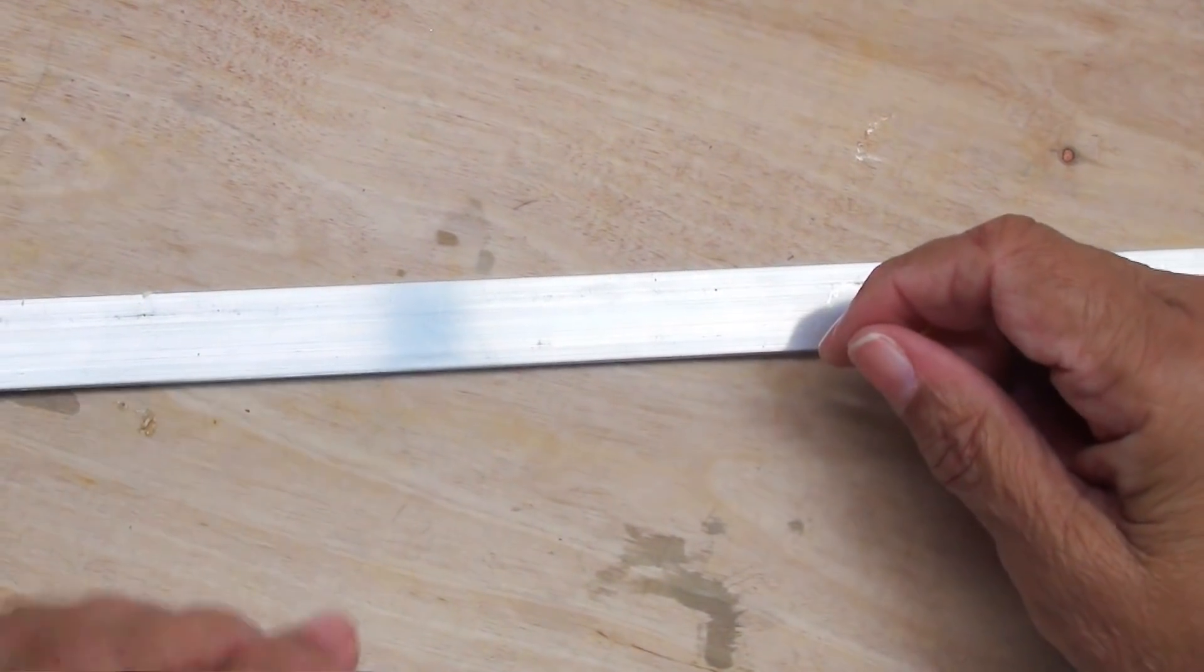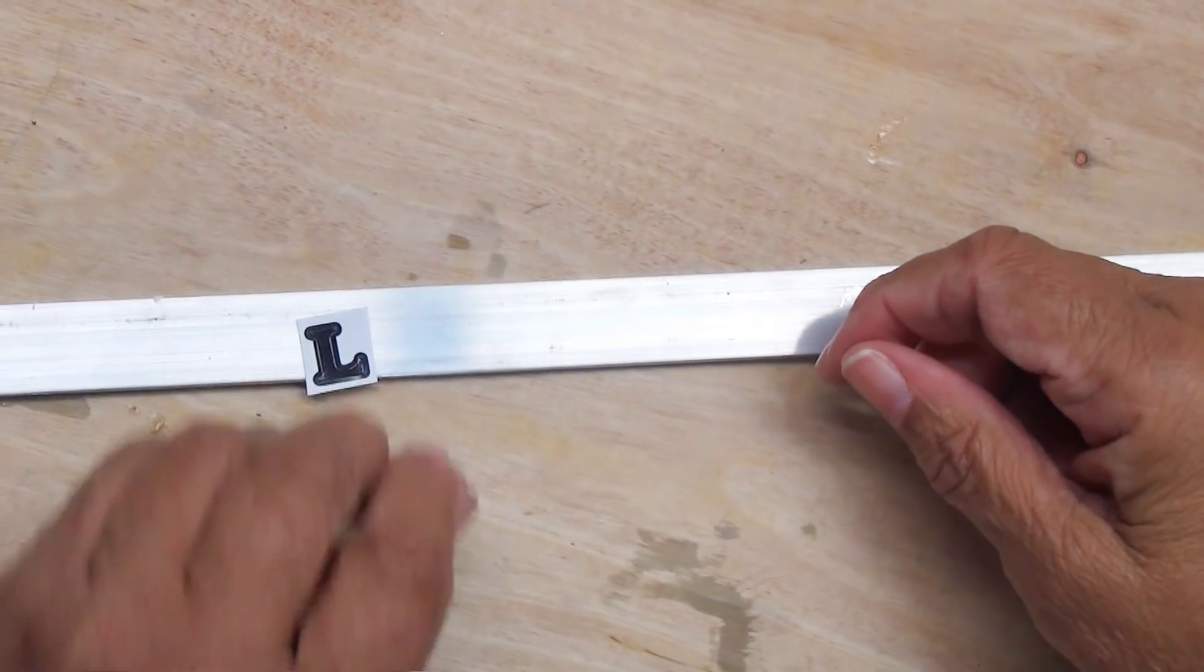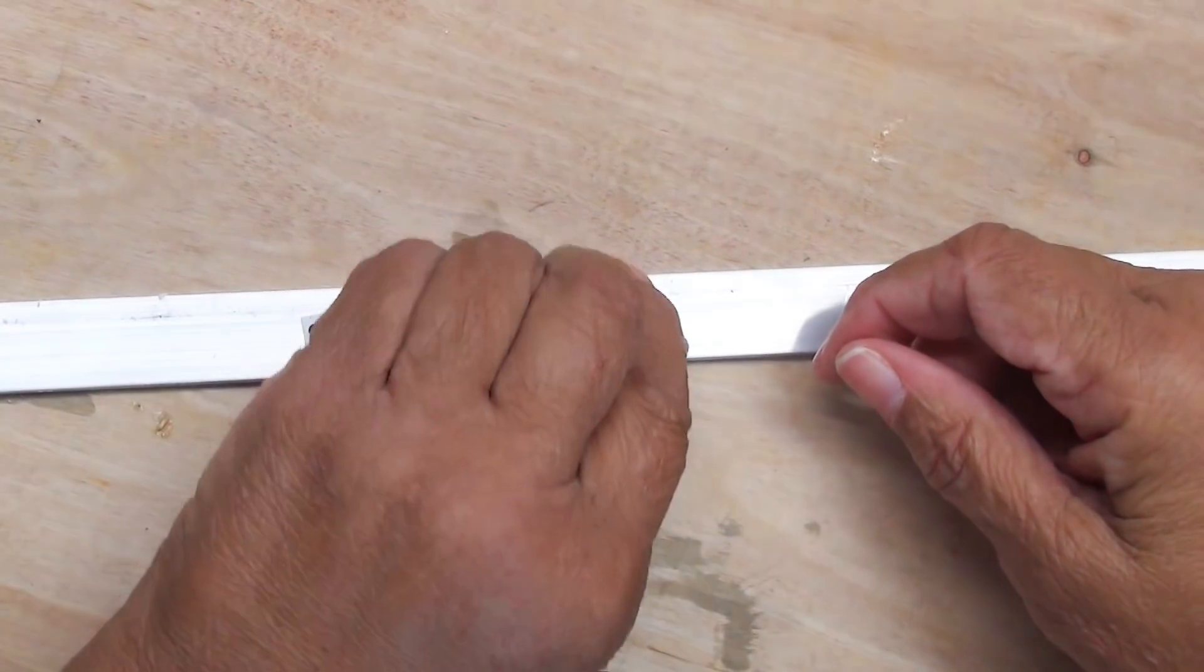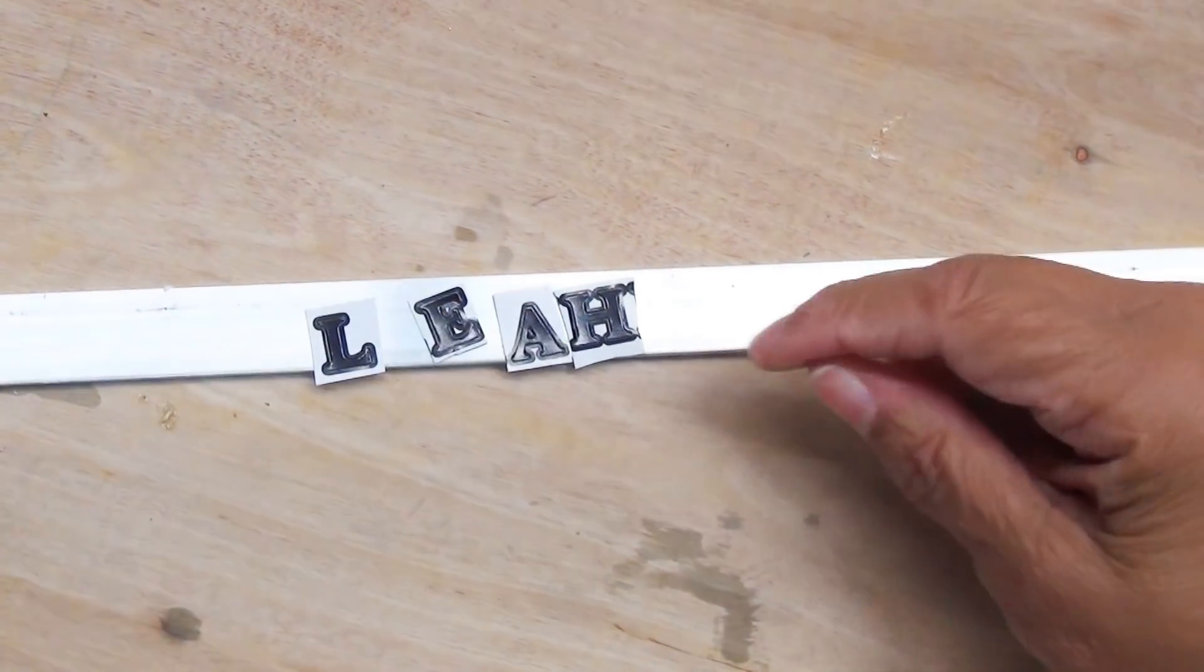Now what I have here is I just have some vinyl letters that spell out Leah. And that's what we're going to use here. Now these vinyl letters, they're called a resist.